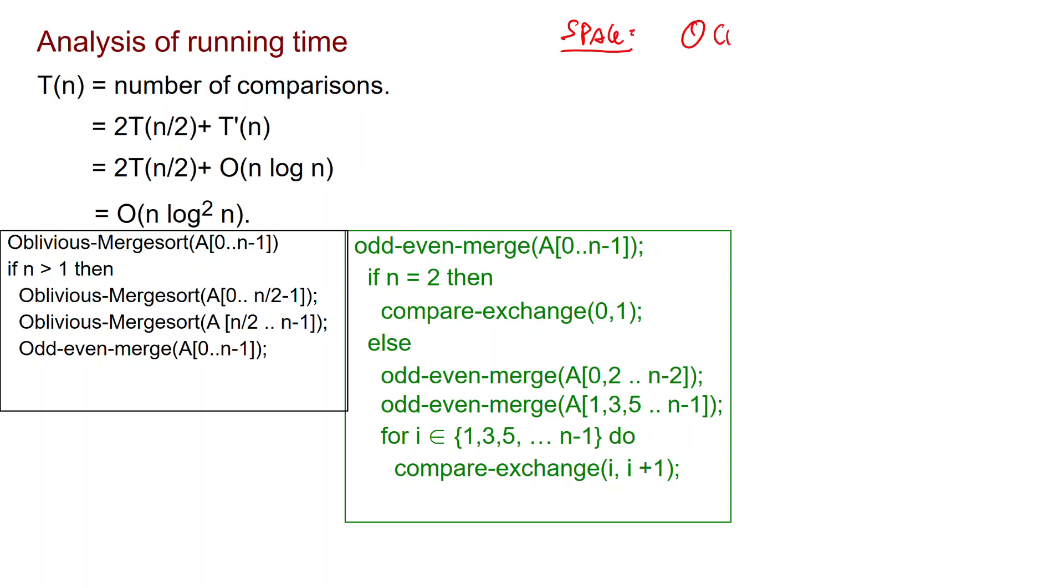We can also make a comment about space. The space will be constant because we only use compare exchange operations which can be done locally. That's it. We have seen a very cool sorting algorithm called Oblivious merge sort. It only performs compare exchange operations, is oblivious. It's important if you want to use sorting with a non programmable hardware. And it's even useful in the theory of NP hardness that the tightest connections rely on sorting algorithms which are oblivious like this one.